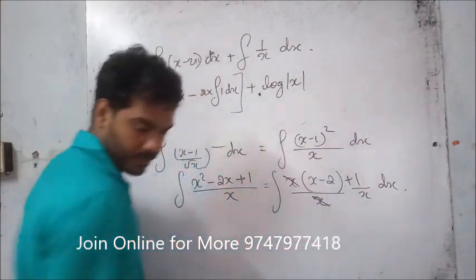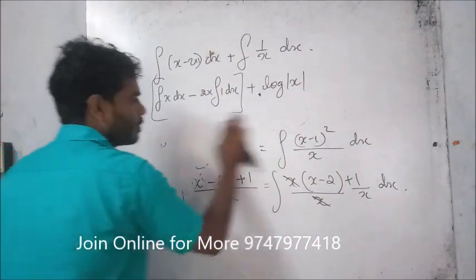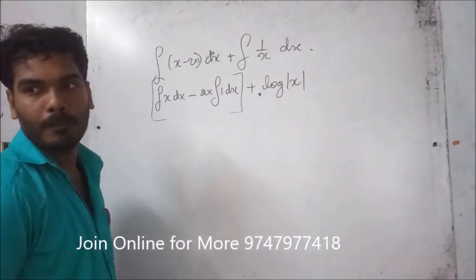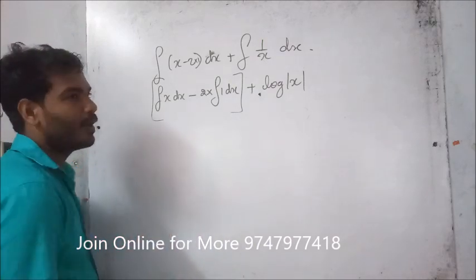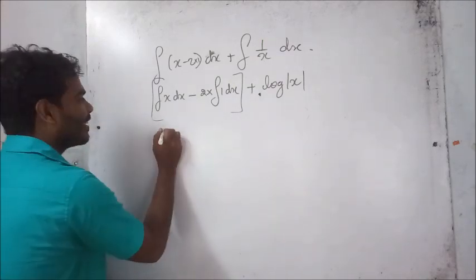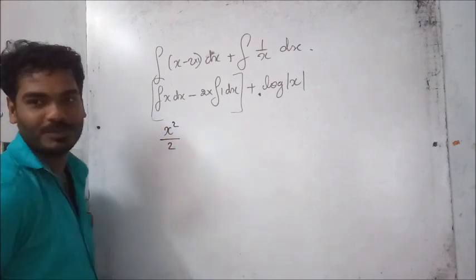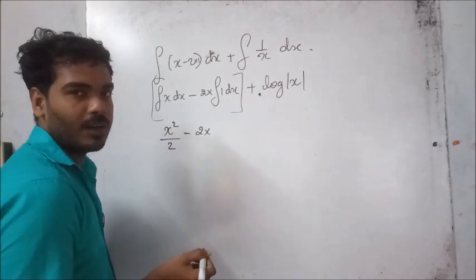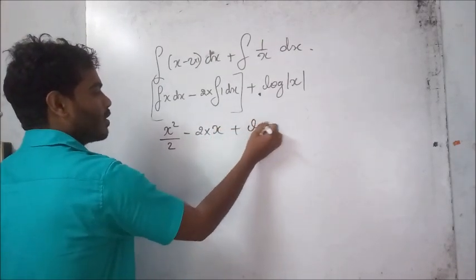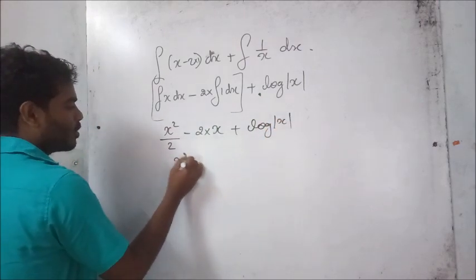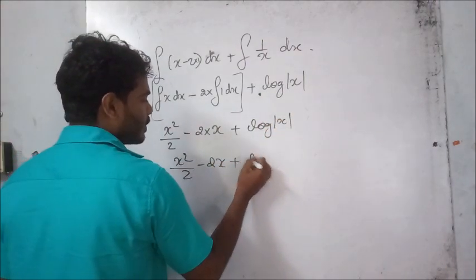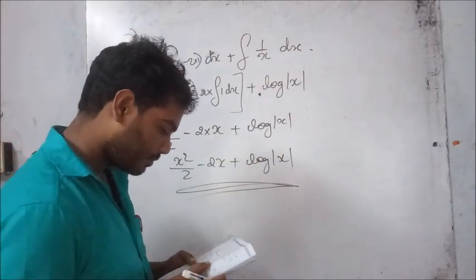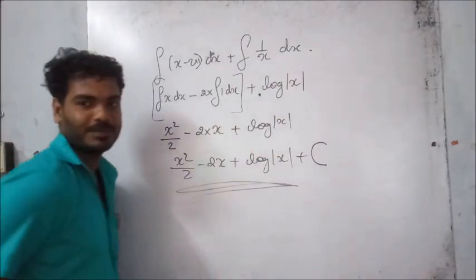Log more or less x. You get the integral of x: x squared by 2 minus 2x plus log more or less x. This is nice, plus integral of C, ok.